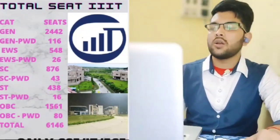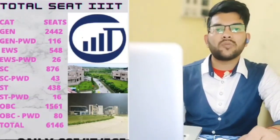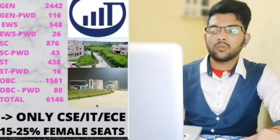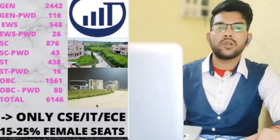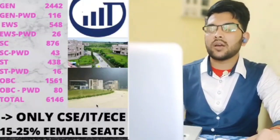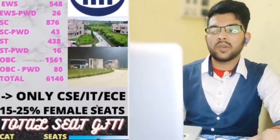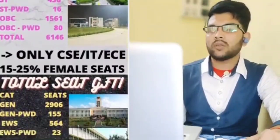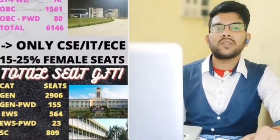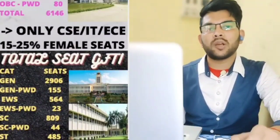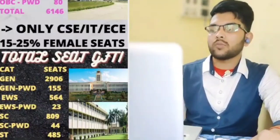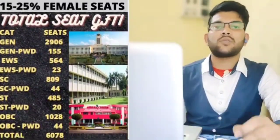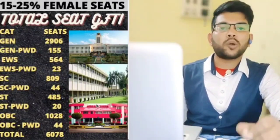For GFTI colleges (Government Funded Technical Institutions): general 2,906, general PWD 155, EWS 564, EWS PWD 23, SC 809, SC PWD 44, ST 485, ST PWD 20, OBC 1,028, OBC PWD 44 seats. The total seats across all GFTIs is 6,078. One notable point is that female reservation in GFTIs is comparatively less than in IITs, IIITs, and NITs.